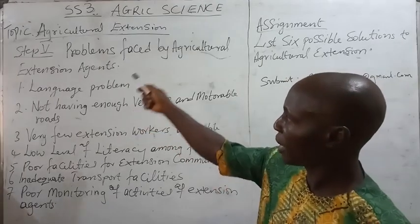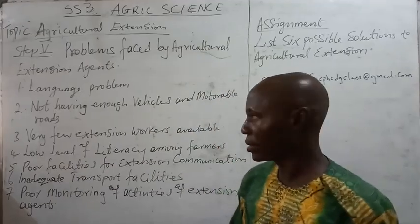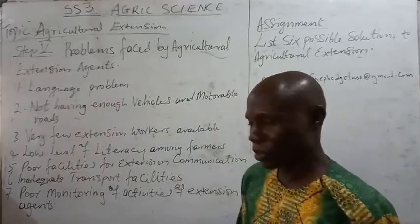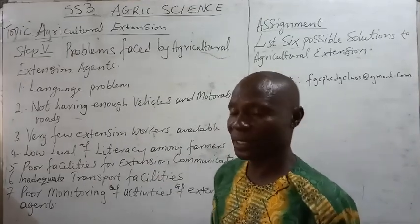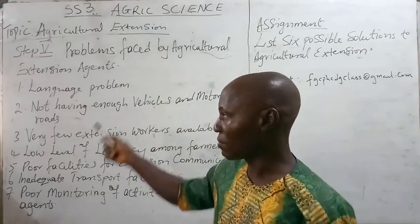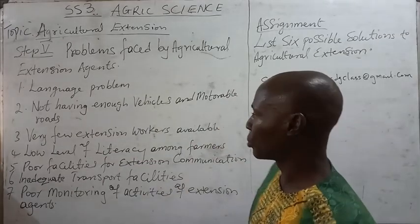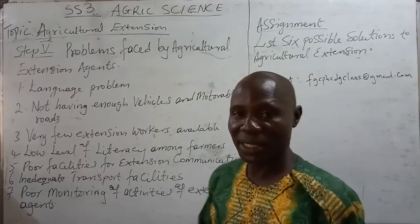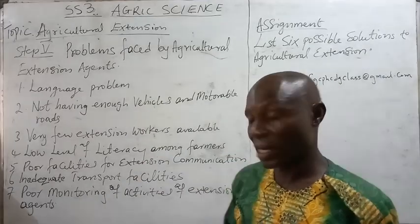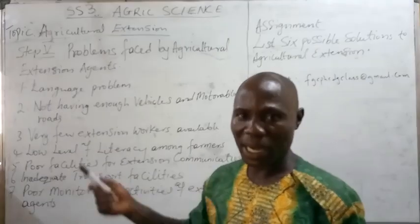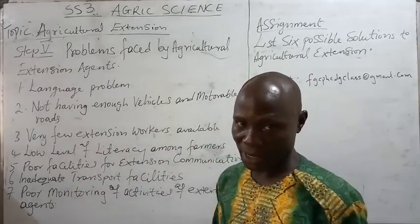The next topic is problems faced by agricultural extension agents. Number one, language problem — the extension officer may not be able to speak the language the farmers use, so it's a problem. Two, not having enough vehicles and motorable roads — extension officers may find it difficult to reach farmers due to lack of transport and terrible roads. Three, very few extension workers are available in the system.